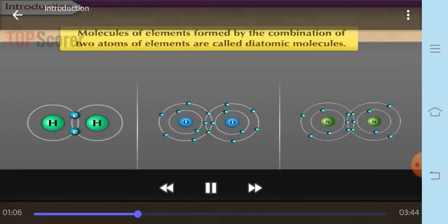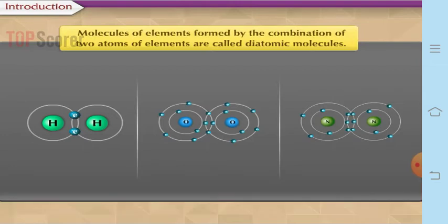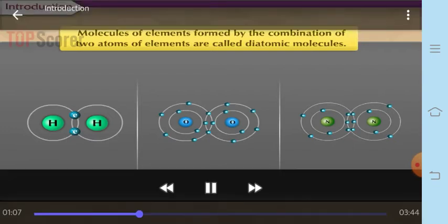Now let us see the next type of molecules of elements. Molecules of elements formed by combination of two atoms are called diatomic molecules. For example, the molecular formula of hydrogen is H2 — two hydrogen atoms combine to form a molecule of hydrogen. In the case of oxygen, two atoms of oxygen form the oxygen molecule. In the case of nitrogen, two atoms of nitrogen combine to form N2, the nitrogen molecule. So hydrogen, oxygen, nitrogen, chlorine, and so on form diatomic molecules. Di means two atoms are combining to form one molecule of that element.